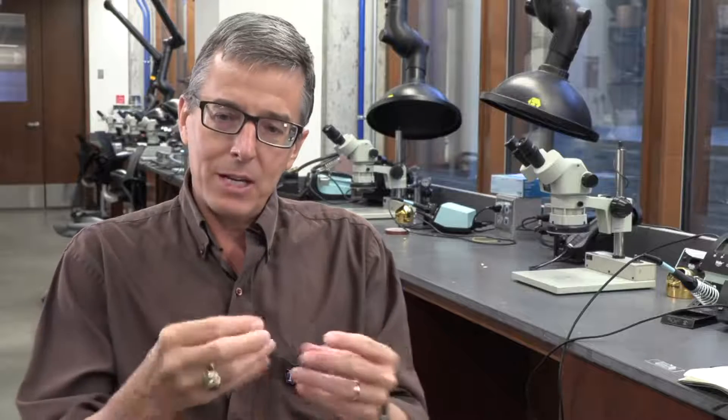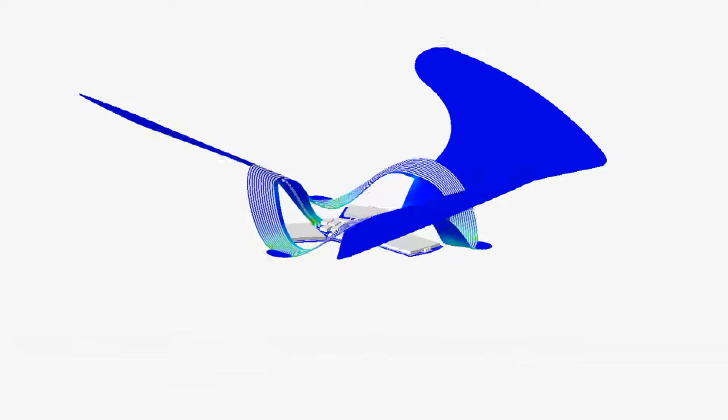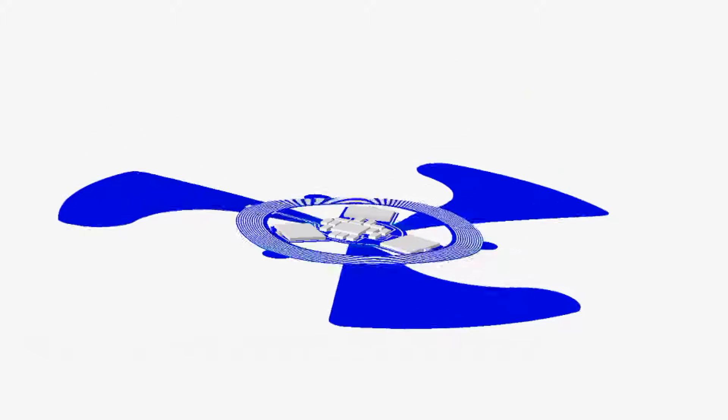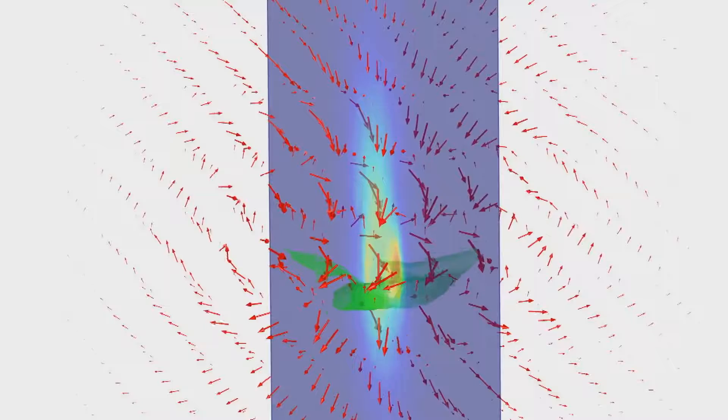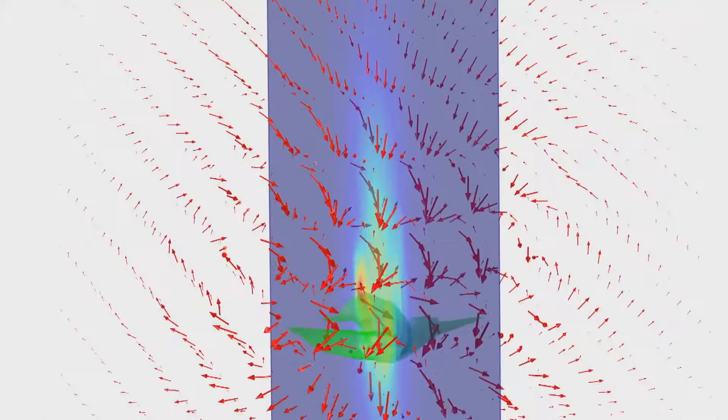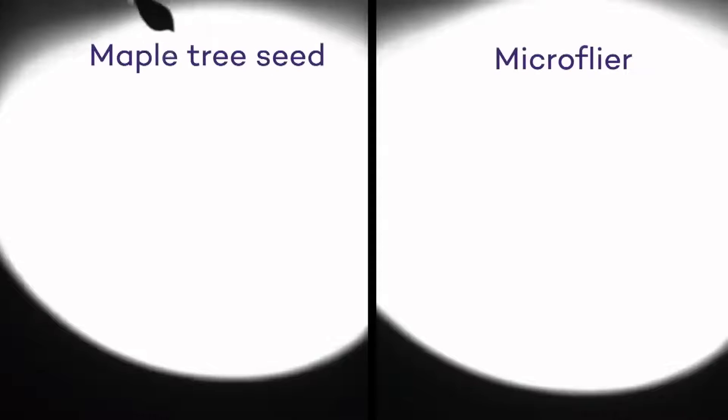But we've integrated with that electronic chip wing structures that form almost what looks like a helicopter. And so as these structures fall through the air, interaction between the air and those wings cause a rotational motion that creates a very stable, slow falling velocity that allows these structures to interact for extended periods with ambient wind, which really enhances the dispersal process.